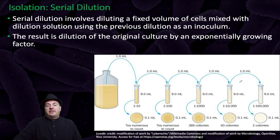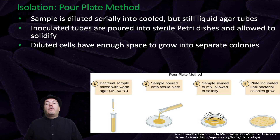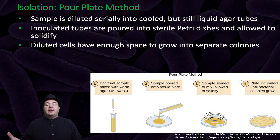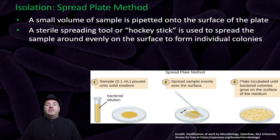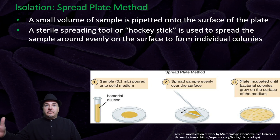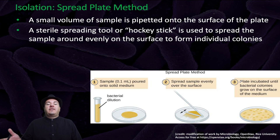Once you've done that, you can use the pour plate method, where the sample is diluted serially into cooled but still liquid agar tubes, then poured into sterile petri dishes and allowed to solidify so diluted cells have enough space to grow into separate colonies. Or you can use the spread plate method, where a small volume of sample from the serially diluted cultures is pipetted onto the surface of a plate and a sterile spreading tool or hockey stick is used to spread the sample evenly to form individual colonies.